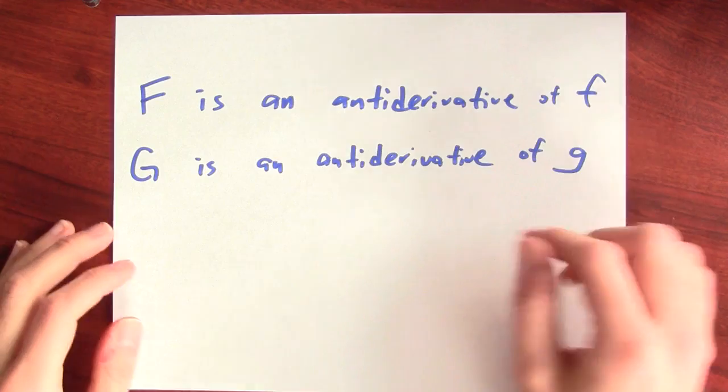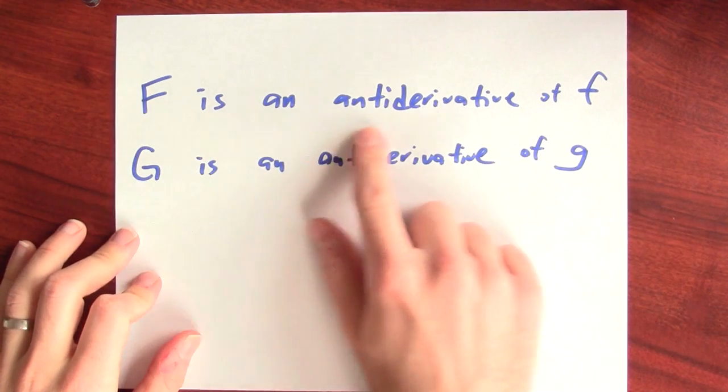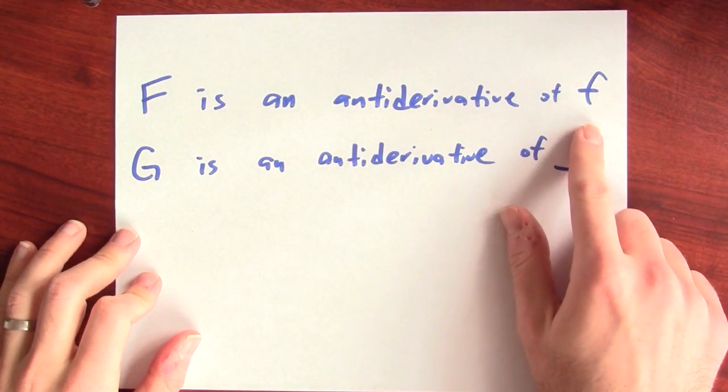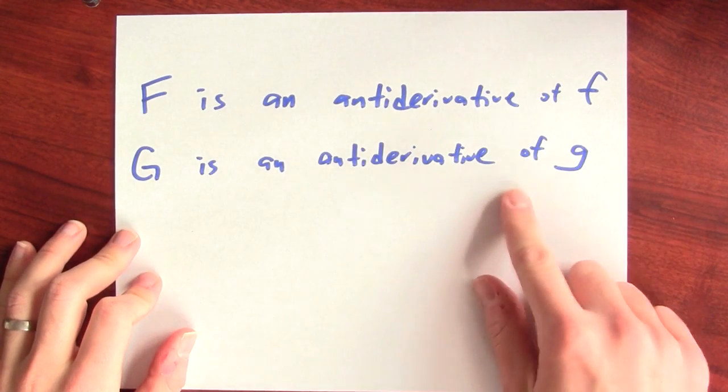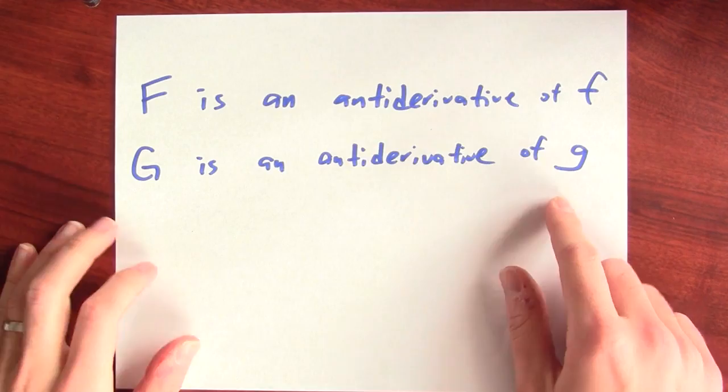A long, long time ago, we started writing down rules for differentiating. We have rules for anti-differentiating as well. Suppose big F is an anti-derivative of little f, and big G is an anti-derivative of little g.